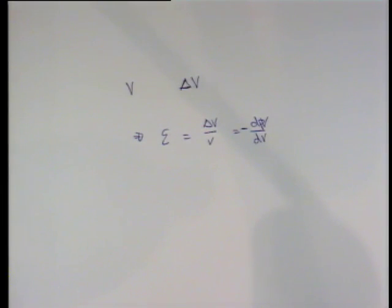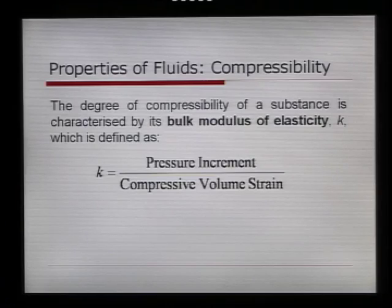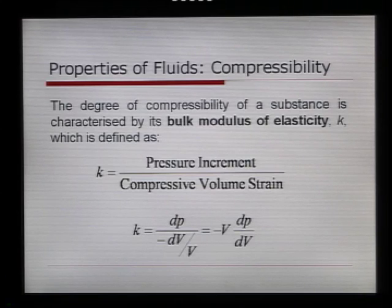Okay, so back to the slides. The bulk modulus of elasticity, K, therefore, is equal to dP, which is the pressure increment, the increase in pressure, divided by minus dV/dV, which is equal to minus V dP/dV. Okay, so let's take a look at a brief demonstration to look at the difference in compressibility of different fluids.